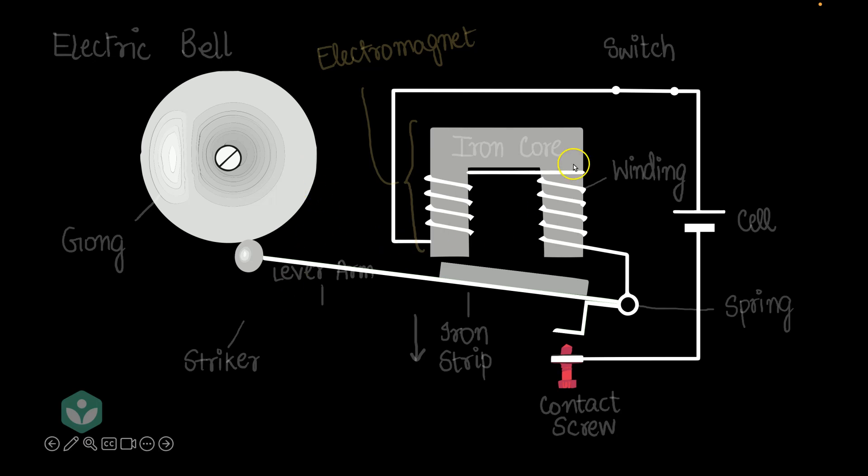Now, there's something else that's also happening. The moment the striker moves upward, contact is lost between this portion of the lever arm and the contact screw. Can you see that gap? And we know that electricity won't flow through the air. And so, the moment the lever arm moves upward, the circuit gets disconnected. The contact screw is now acting like a switch and turning the electromagnet off.